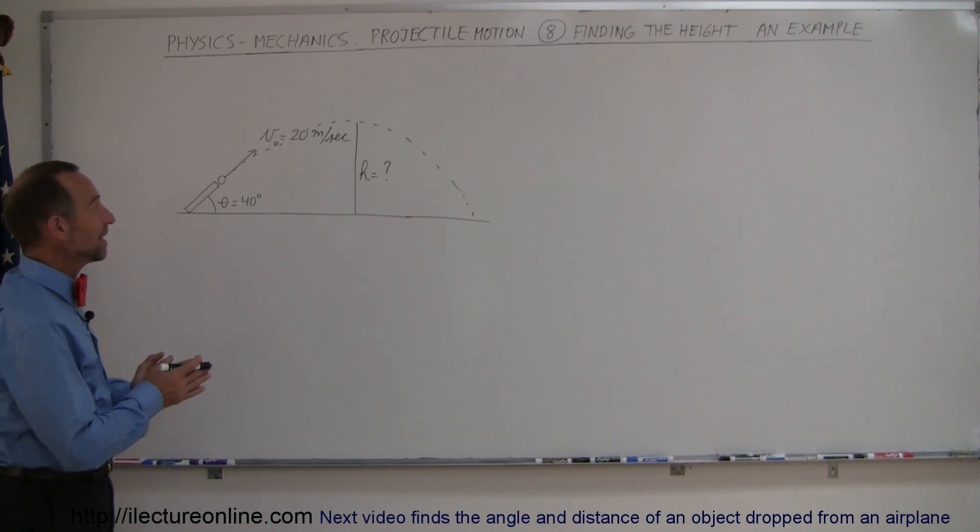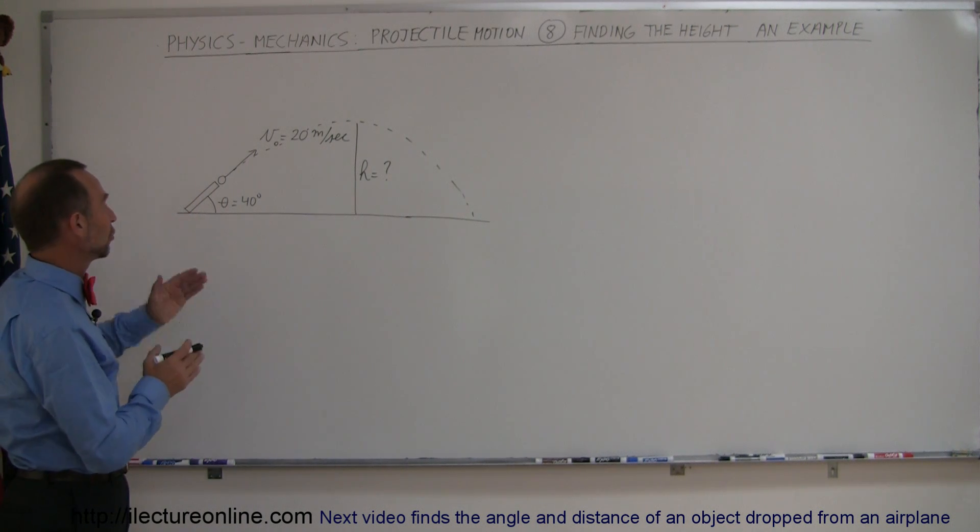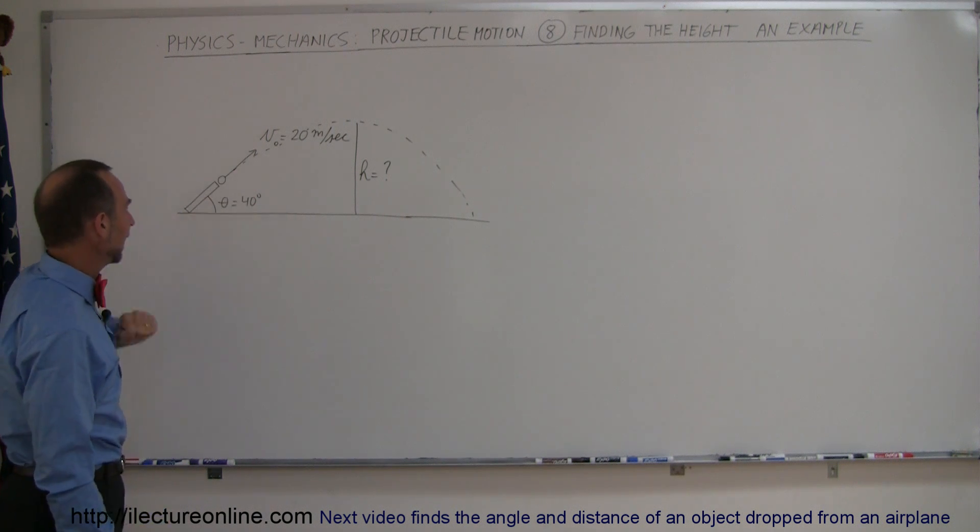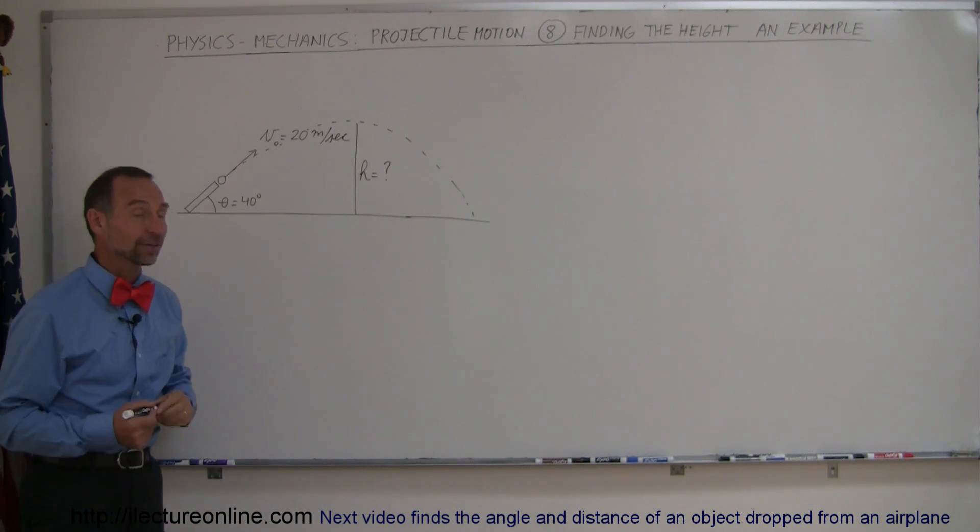And here's an example of how to find the height reached by a projectile when we shoot it from the ground with an initial velocity of 20 meters per second and an angle of 40 degrees with the horizontal.